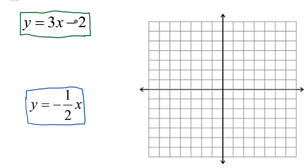First, we'll take a look at this green line. Since it's set equal to y, we know that's going to be slope-intercept form: y equals mx plus b. Our b value is the y-intercept, and our m value is the slope — it's always the number in front of the x, but it doesn't include the x. The first thing we want to graph is the y-intercept.